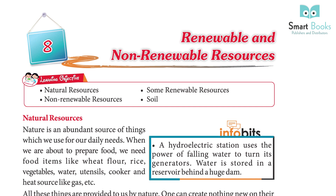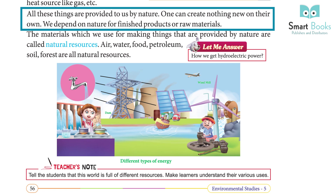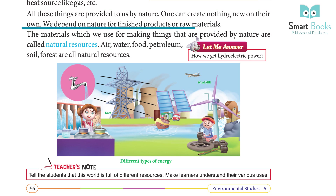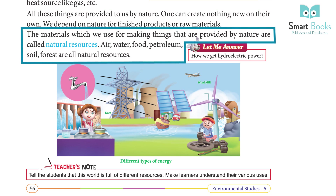A hydroelectric station uses the power of falling water to turn its generators. Water is stored in a reservoir behind a huge dam. All these things are provided to us by nature. One can create nothing new on their own. We depend on nature for finished products or raw materials. The materials which we use for making things that are provided by nature are called natural resources.